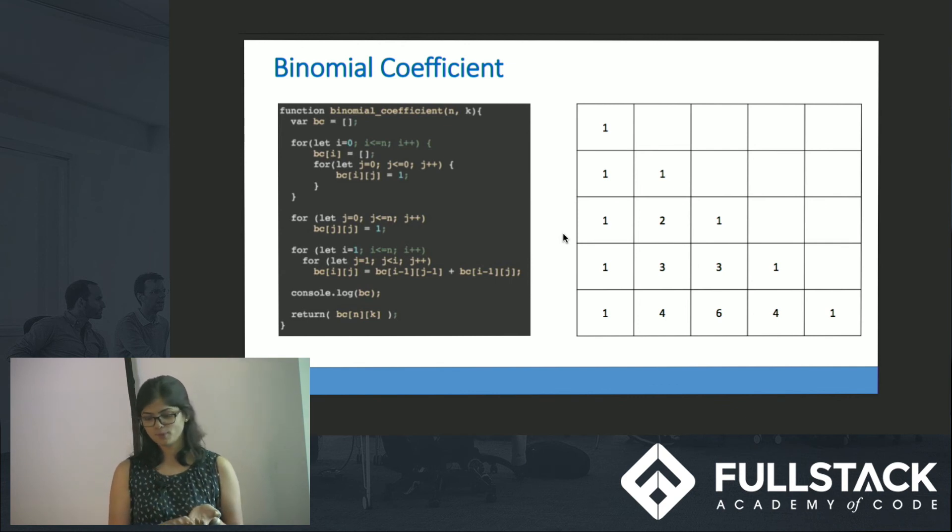We know the recurrence relation, we know the base case, so we are good to go with the program. This is how the program looks like. Initially I have initialized all n choose 0, which is the column representing all 1s, and I have initialized all n choose n to be 1, which is one more base case, which is the diagonal 1s.